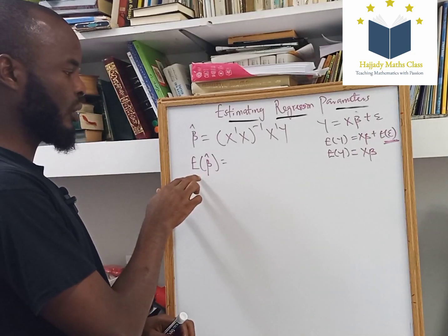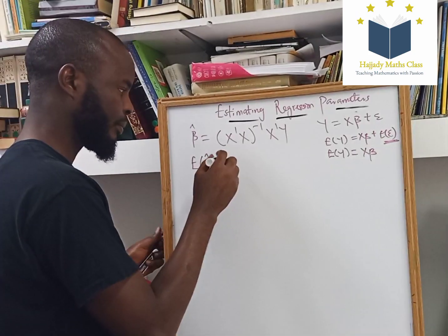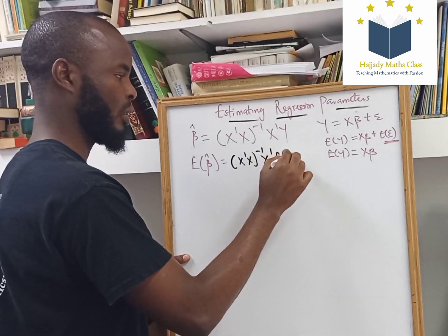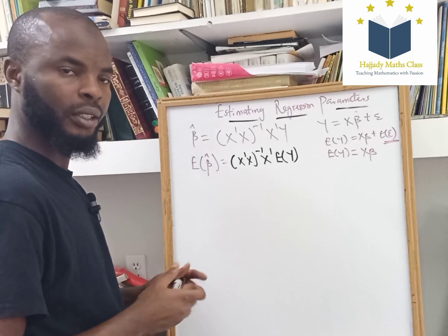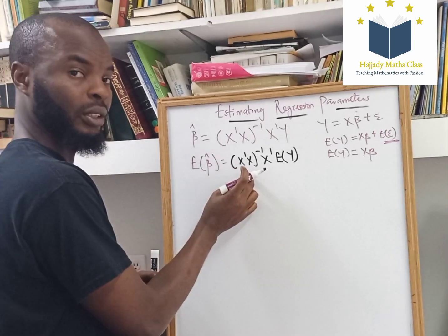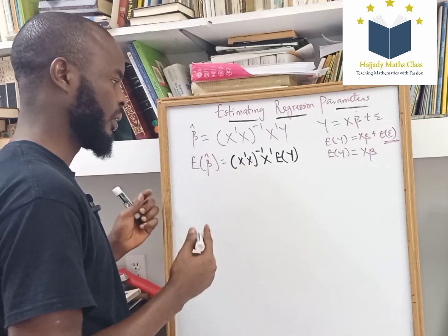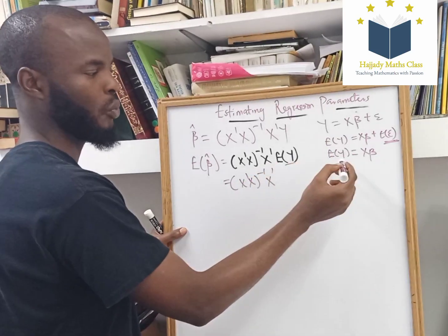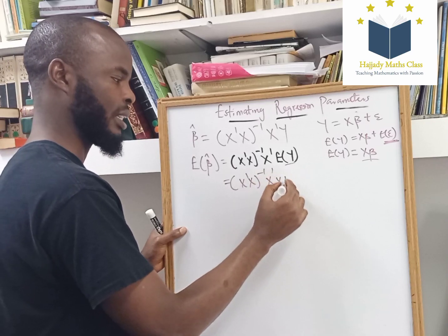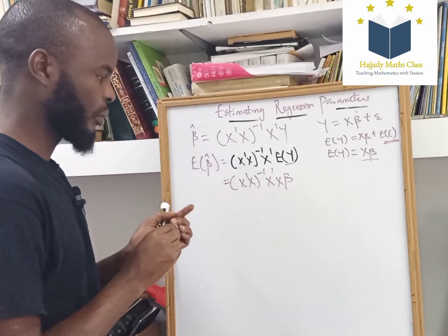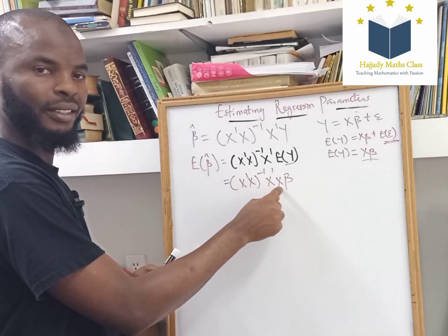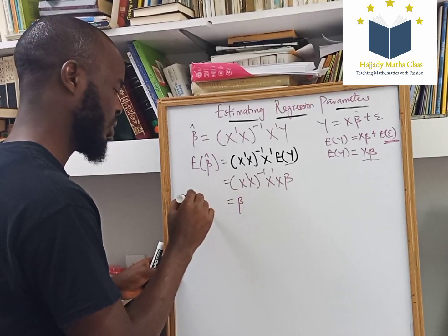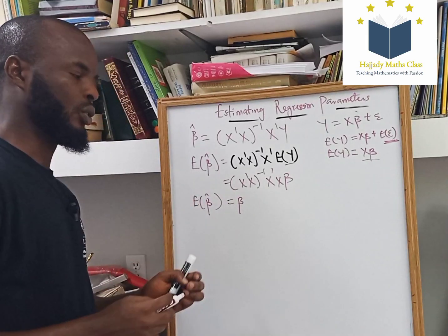Recall that our epsilon follows a normal distribution with mean zero and variance sigma squared. That shows that the expectation of epsilon is zero. So, our expectation of y is Xβ. So, here, the expectation of beta-hat is the same thing as (X-prime X) inverse X-prime times the expectation of y. Because X are the predictor variables, we have (X-prime X) inverse X-prime times Xβ, which equals beta. So, it shows that this is an unbiased estimate.